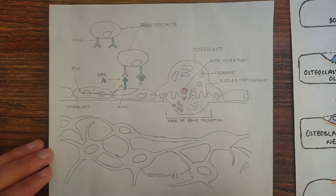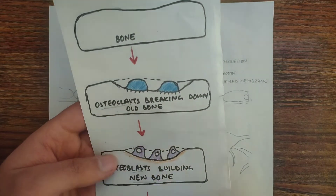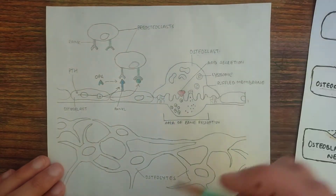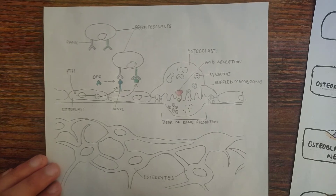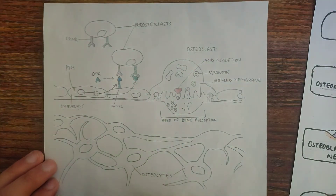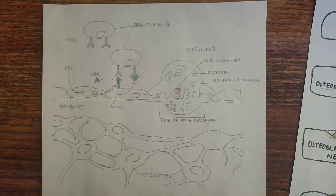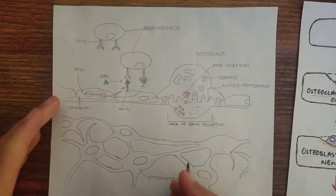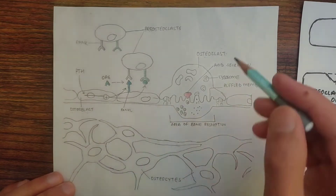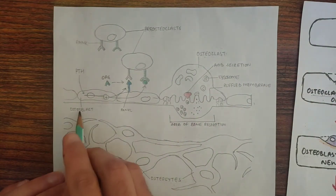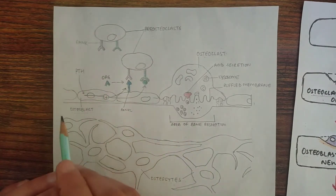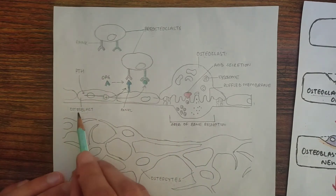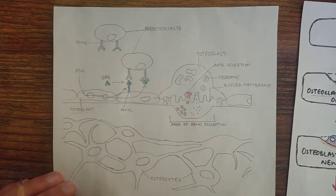Now let's come back to the main topic, which is parathyroid hormone. It causes resorption of the bone, meaning it will cause bone breakdown, and it is done by the osteoclast cells. Now the osteoclast cells do not have parathyroid hormone receptors — these cells lack the parathyroid hormone receptors. So parathyroid hormone controls the activity of osteoclasts by an indirect mechanism, which means that parathyroid hormone will bind to some different cell besides osteoclast, and that different cell is the osteoblast.